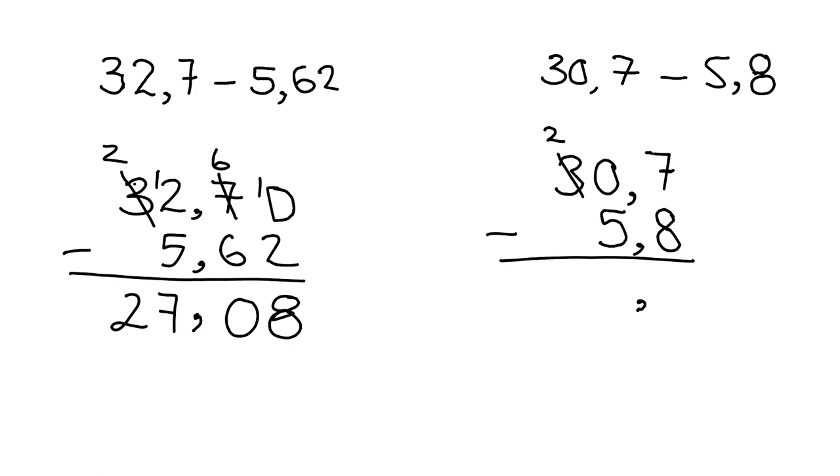We take one of those and pass it over to there where it becomes a 10. Then we can take one of these 10, so we're left with 9, and we pass it over here. We have 17 minus 8, which gives us 9.